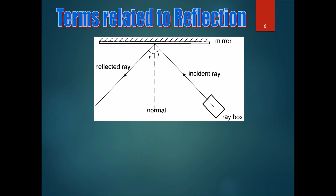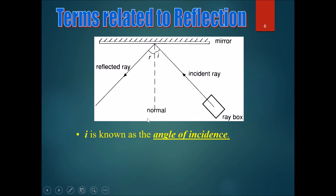For terms related to reflection: the angle of incidence (I) is the angle between the normal line and the incident ray. Notice that this is not the angle between the incident ray and the mirror — a common mistake many people make.